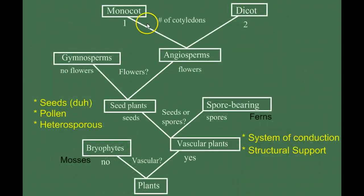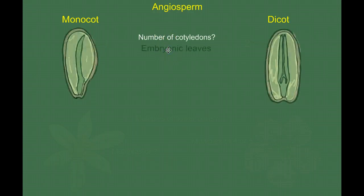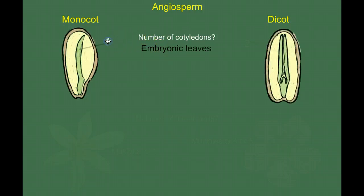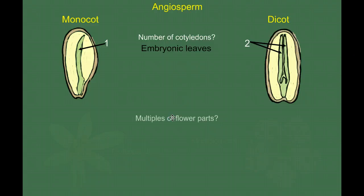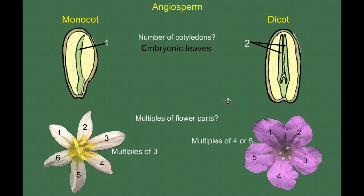What's the difference between monocots and dicots within the angiosperms? The name comes from the number of cotyledons, which are embryonic leaves. In monocots, there's a single embryonic leaf inside the seed; in dicots, there are two. Another way to tell them apart is to look at the flowers and count flower parts. In monocots, flower parts are in multiples of three — for example, six petals is a multiple of three. In dicots, we have multiples of four or five — counting petals gives us five here.